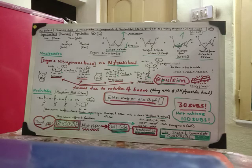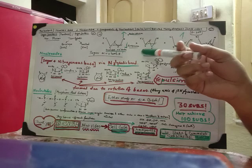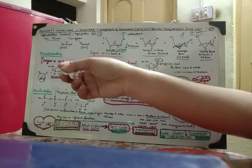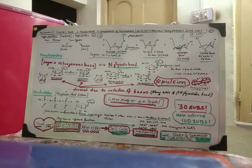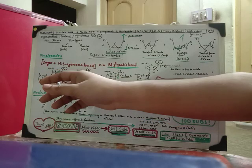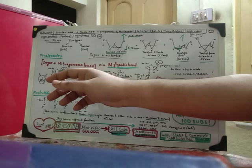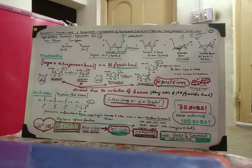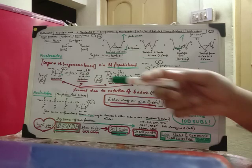Now coming to nucleosides: when a sugar and a nitrogenous base join together, they form the nucleoside. The sugar in its various conformations joins with nitrogenous bases — adenine, guanine, cytosine, thymine, uracil — to form nucleosides. This connection, shown by the bond toward the nitrogen of the nitrogenous base, is known as the beta-N-glycosidic bond. It is a sugar attached to a nitrogenous base, and that forms the nucleoside, which is required in our DNA.